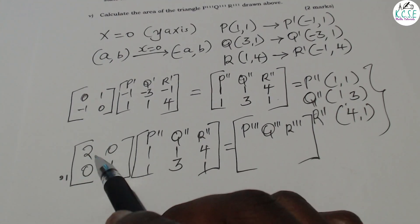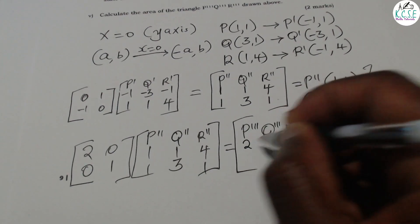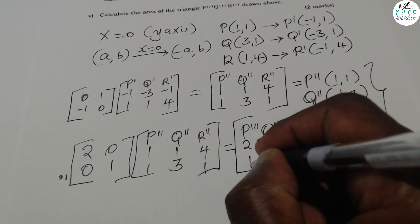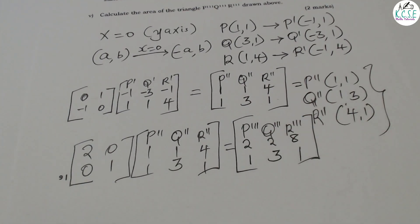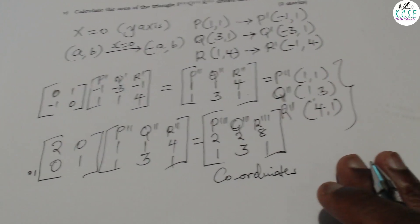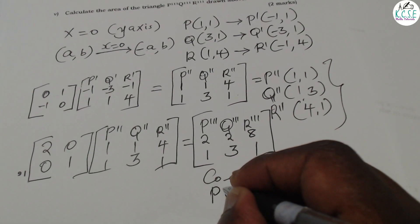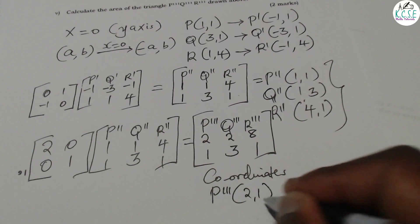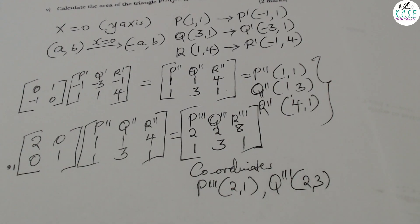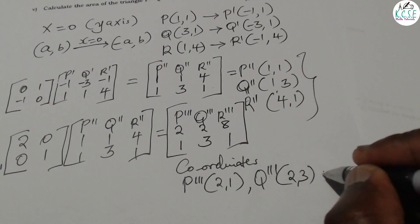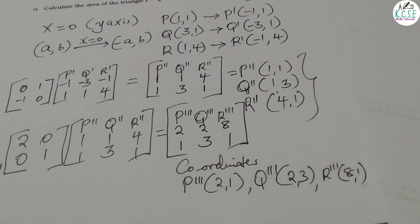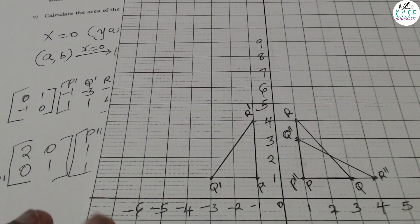Multiplying [2,0;0,1] by the coordinates of P2(1,1), Q2(1,3), R2(4,1): row 1 gives 2, 2, 8 and row 2 gives 1, 3, 1. So P3 = (2,1), Q3 = (2,3), R3 = (8,1).